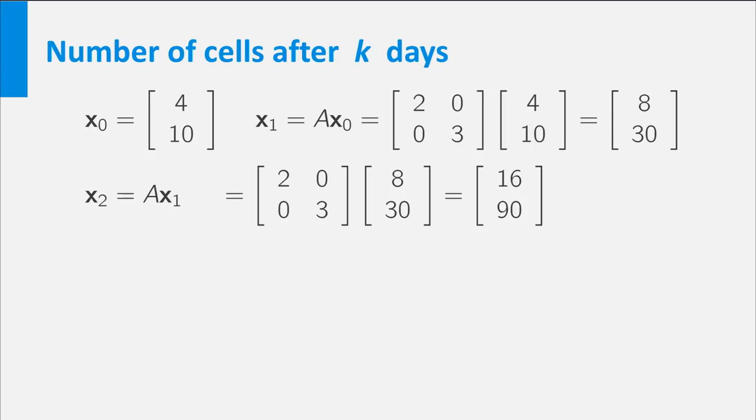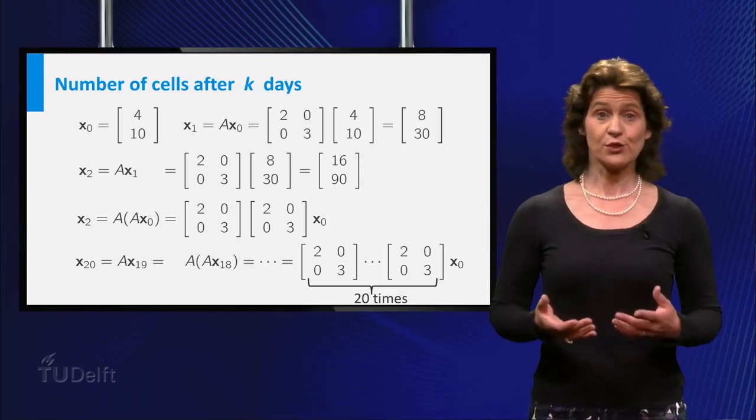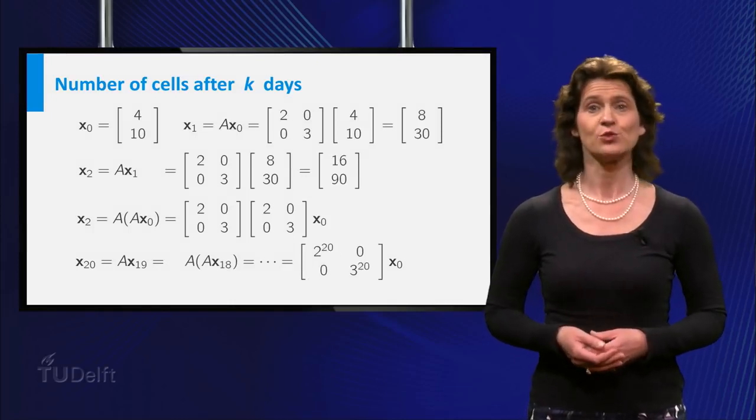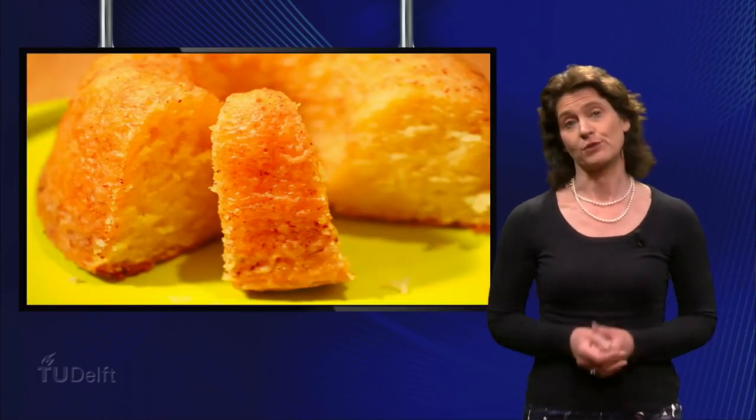This you can also compute like this: A times A times x0. And after 20 days, then it is equal to A times x19, which is equal to A times A times x18, and so on, until you multiply A 20 times with itself and apply it to x0. You can check for yourself that it is equal to this simple expression. Piece of cake, right?